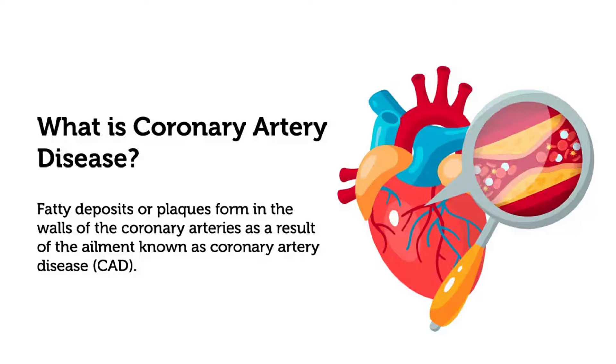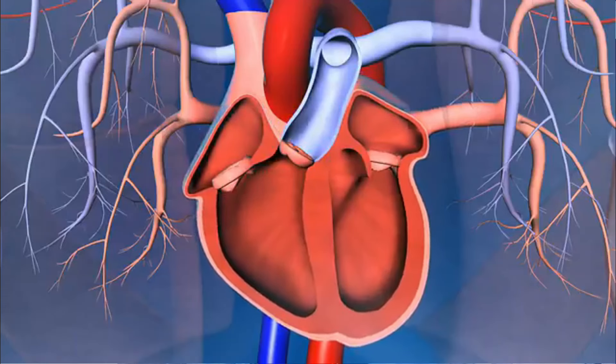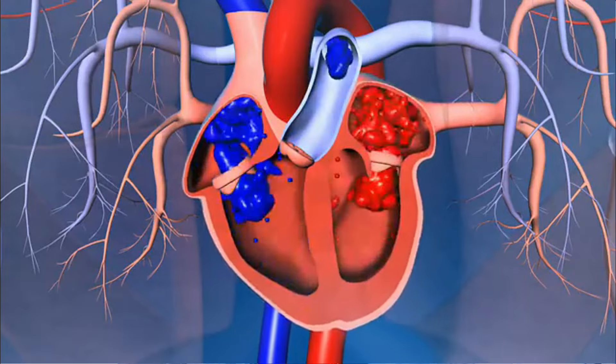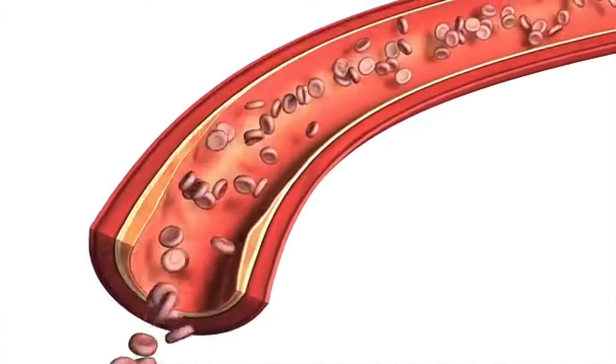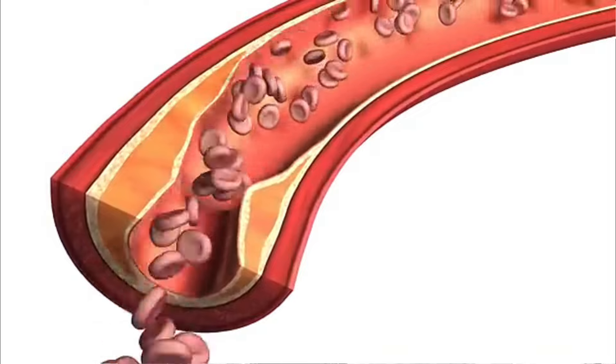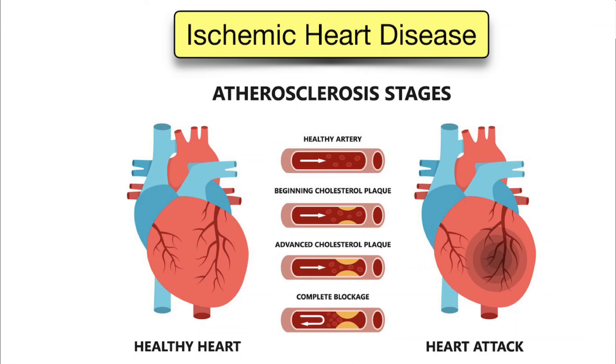We all know the heart pumps and supplies blood to the whole body. But how do the heart muscles get their supply of blood? Three main arteries: the right coronary artery, left coronary artery, and left anterior descending. Now the lumen of the arteries gets narrowed due to deposition of cholesterol, and these cholesterol deposits form plaques. When the lumen gets so narrowed that blood doesn't reach the muscles, it is called ischemic heart disease.